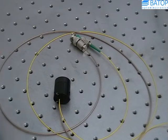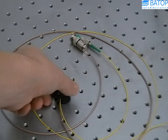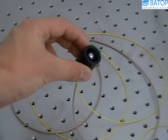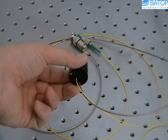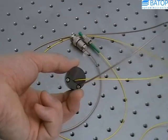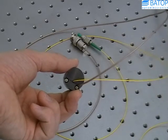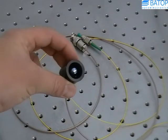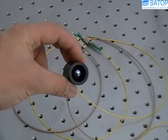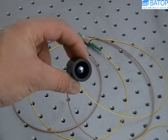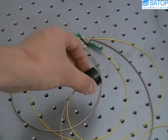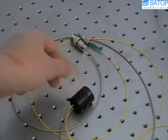As TeraHertz emitter and detector we are using fiber coupled photoconductive antennas, which are encapsulated in these small footprint mechanical modules. On the rear end an optical fiber and an electrical cable exit the module. The front end is formed by a silicon substrate lens. A link to more information on photoconductive antennas and their principle of operation can be found in the description below.